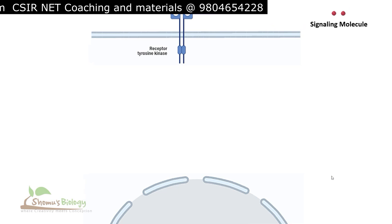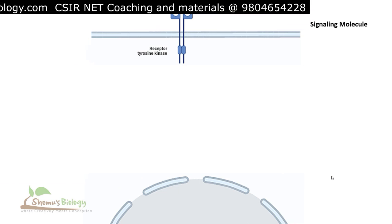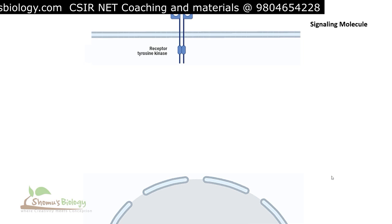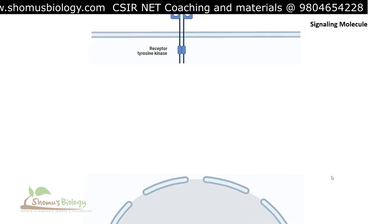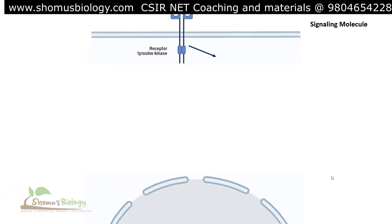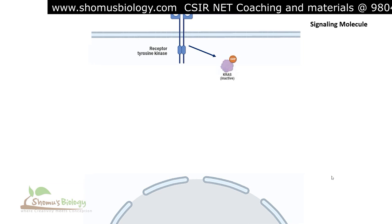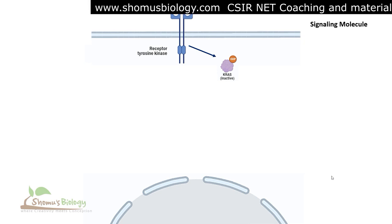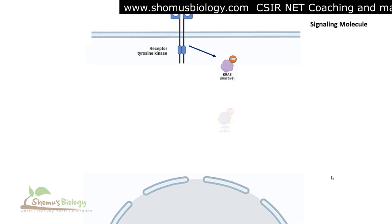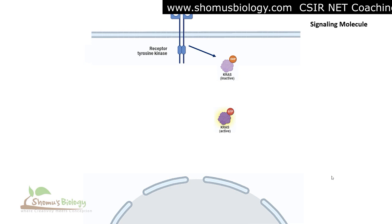This signaling molecule, the growth factor, binds to the receptor tyrosine kinase, and upon binding, the receptor tyrosine kinase is going to be activated. The activated receptor tyrosine kinase then activates KRAS. KRAS, when associated with GDP, is in its inactive form. The moment its GDP is substituted with GTP, it becomes active.